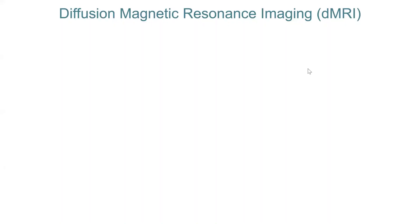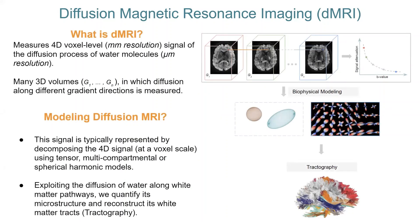Diffusion MRI is a 4D imaging technique where many 3D volumes corresponding to different gradient directions are acquired. You may have already seen this in the videos preceding this one. In each voxel of diffusion MRI, we are trying to capture a signal decay. This signal that we acquire is modelled to gain insight into the microscopic details of the tissue architecture. Typically, the diffusion signal in each voxel is modelled using multicompartmental mixture models or by using a spherical harmonic basis.